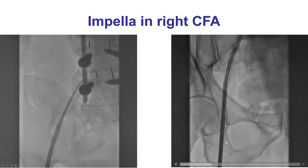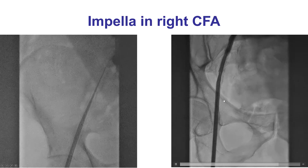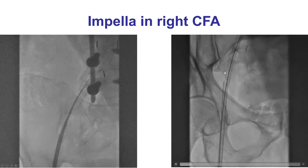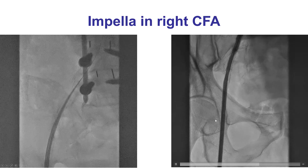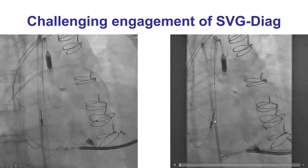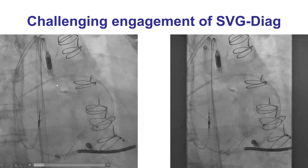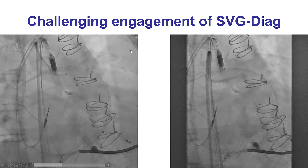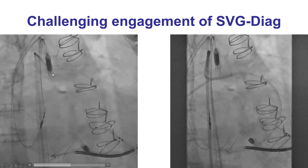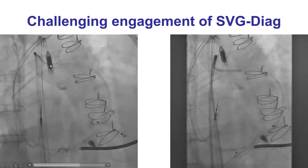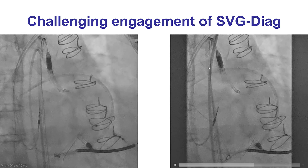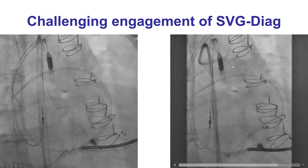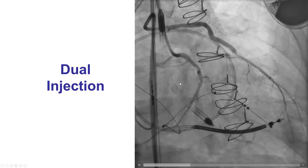After Impella sheath placement, there was not really any antegrade flow in the limb. However, the consensus was to proceed with the procedure, and hopefully the Impella could be removed at the end to prevent significant ischemia of the right lower extremity. We had significant difficulty engaging the saphenous vein graft — we tried a diagnostic catheter exchange without success, and eventually used a Haki Stick guide instead of the AL1, which is our go-to guide for left-sided grafts. That was eventually successful.